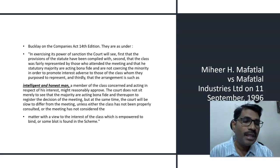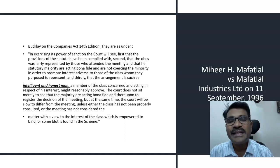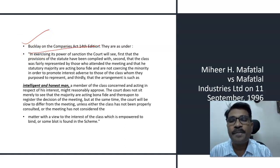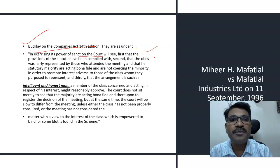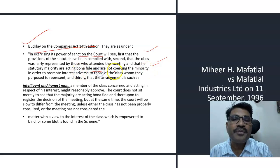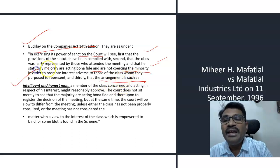In the book on company law by Buckley (14th edition), with regard to the power of sanction of the court, it states the court will see: first, that the provisions of the statute have been complied with; second, that the class was fairly represented by those who attended the meeting and that the statutory majority are acting bona fide and not coercing the minority in order to promote interests adverse to those of the class they propose to represent; and third, that the arrangement is one which an intelligent and honest man, a member of the class concerned and acting in respect of his interest, might reasonably approve.